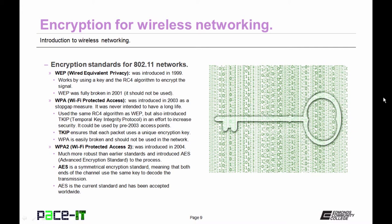WPA's replacement was WPA2, Wi-Fi Protected Access 2, introduced in 2004. It's much more robust than earlier standards and it introduced AES, Advanced Encryption Standard. AES is a symmetrical encryption standard, which means that both ends of the channel use the same key to decode the transmission. AES is very hard to break and is the current standard, accepted worldwide as an encryption standard.